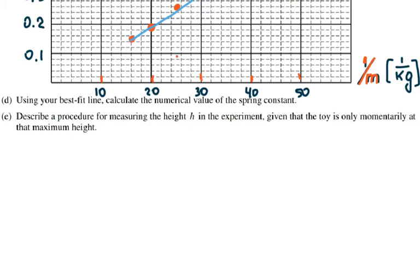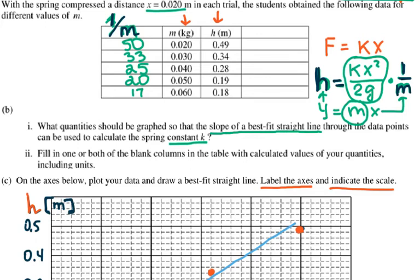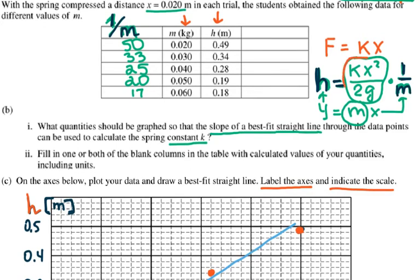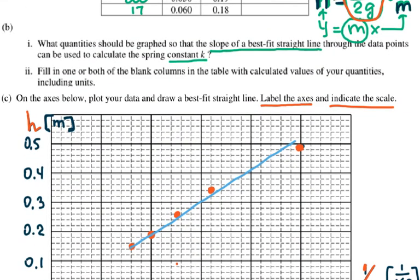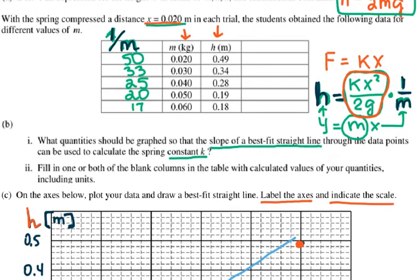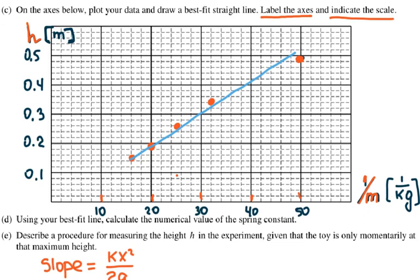Now for part d: using your best fit line, calculate the numerical value of the spring constant. So going back to our expression, we have the slope equals kx² over 2g. I know that the slope equals kx² over 2g, and they take every value of x as 0.02, so that is a constant. I just can plug it in. What I need to find is the slope.